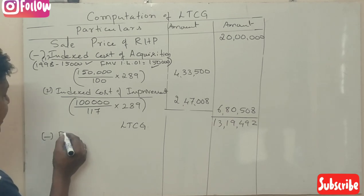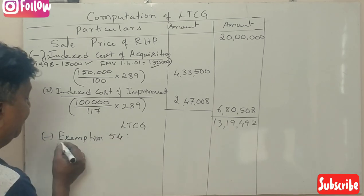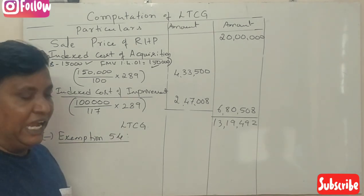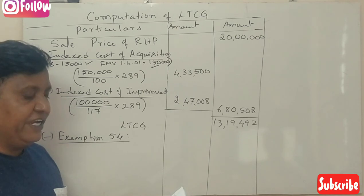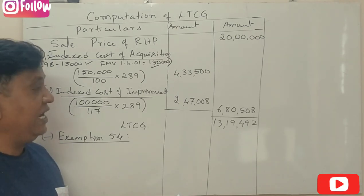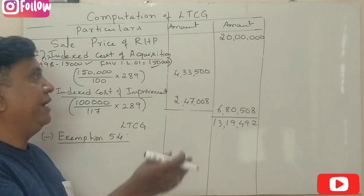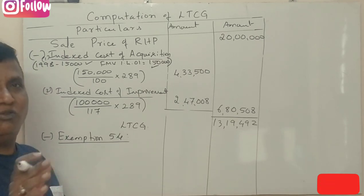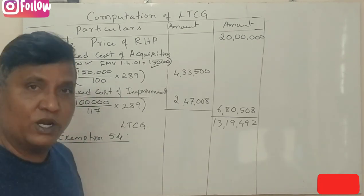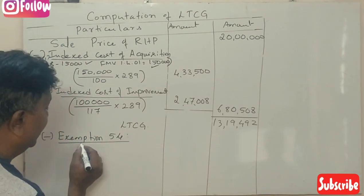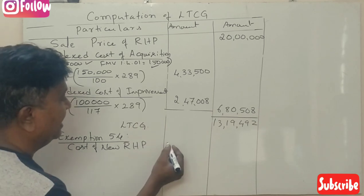Now we apply Section 54 exemption. Shree Ragunandan sold his residential house in Bangalore and purchased a new residential house property at Mysore on 25 March 2020 for Rs. 12 lakhs. Under Section 54, the cost of the new residential house property is Rs. 12 lakhs, which qualifies for exemption from capital gains.